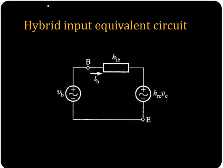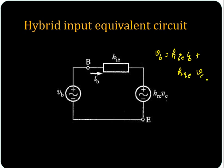So you can draw the hybrid input equivalent circuit from these equations. On the input side you have VB equal to HIE times IB plus HRE times VC.